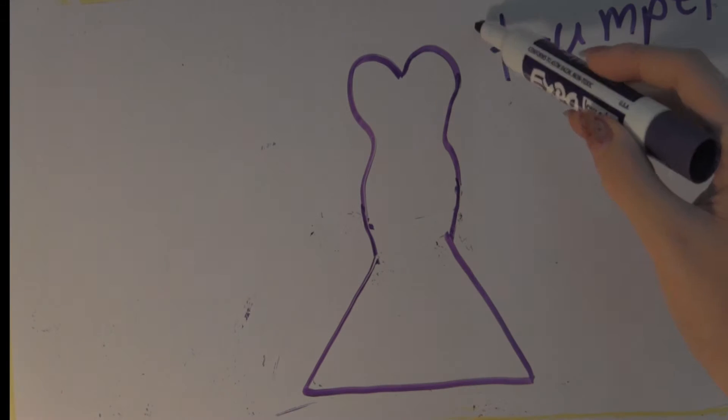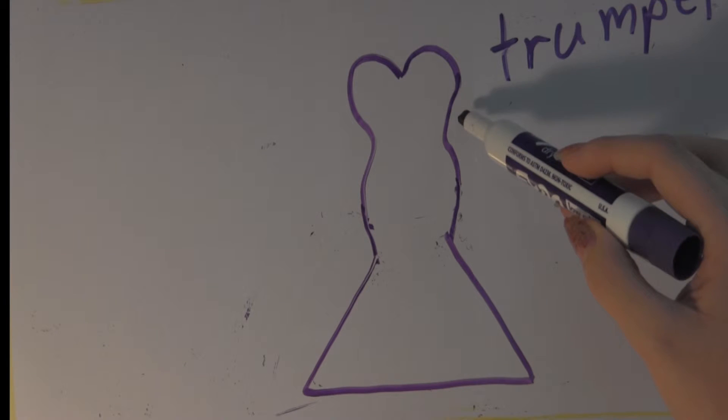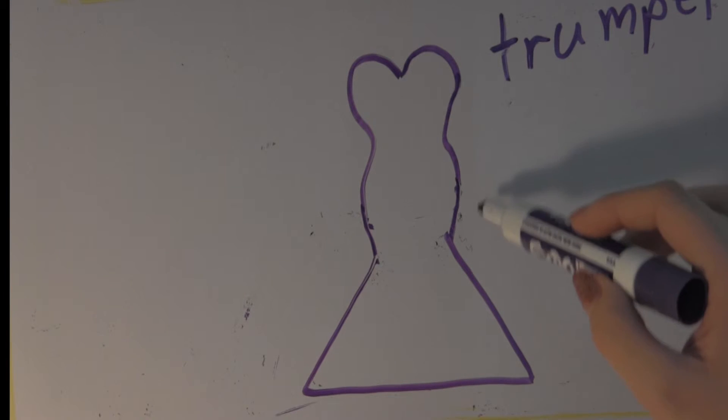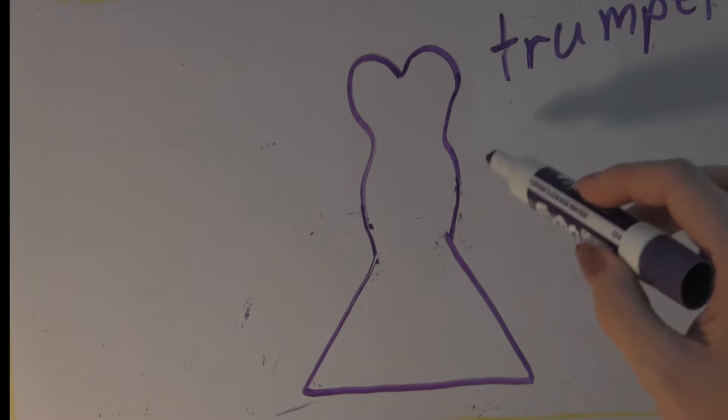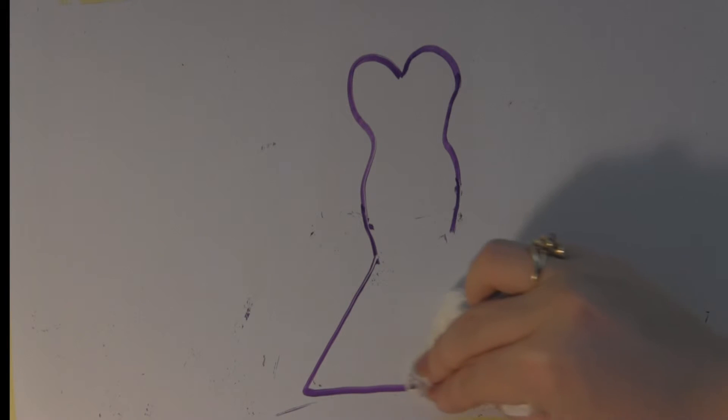The bodice of the trumpet is going to hug the body from the bust all the way to about mid-thigh depending on your height. From there, the skirt will begin with volume. Brides love this style gown because it shows off all their curves and is still more comfortable than a traditional mermaid.